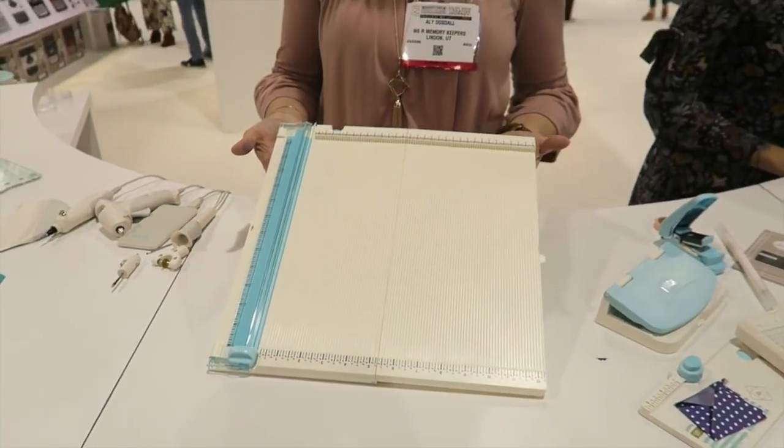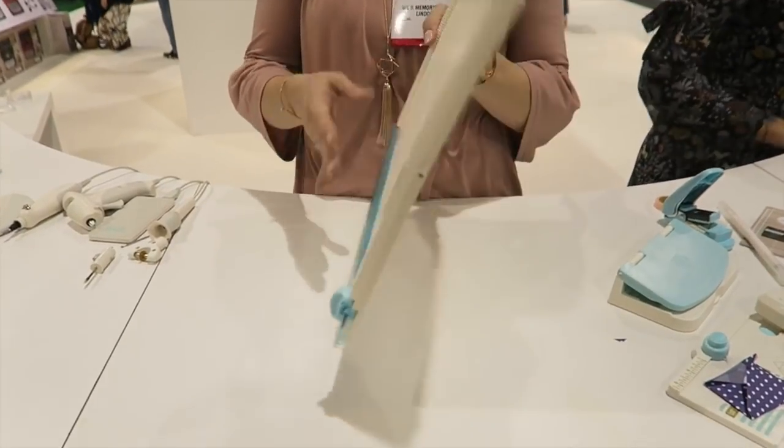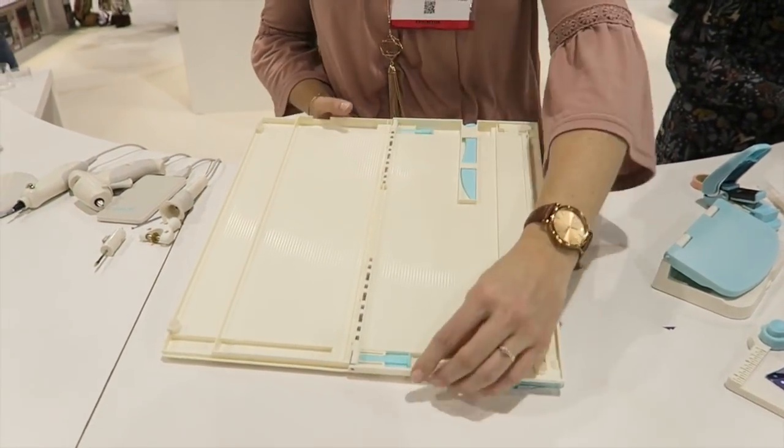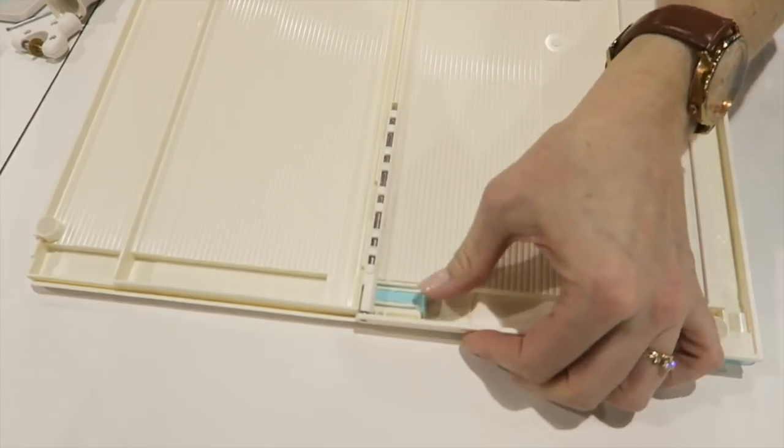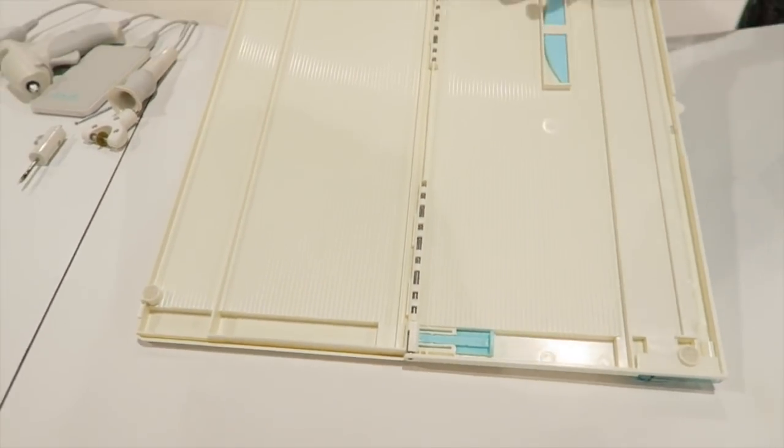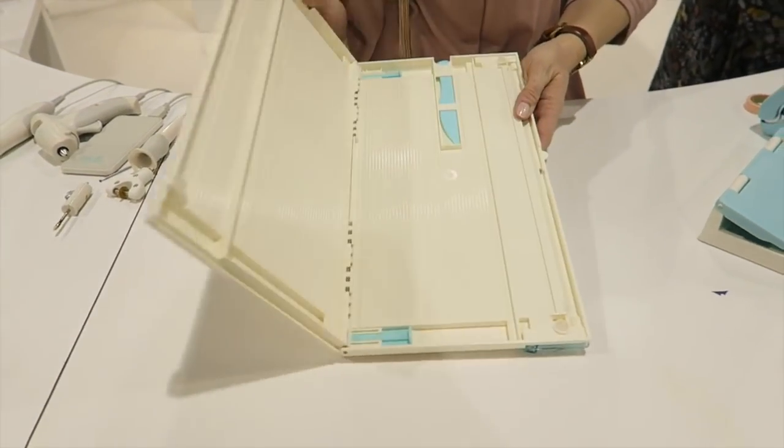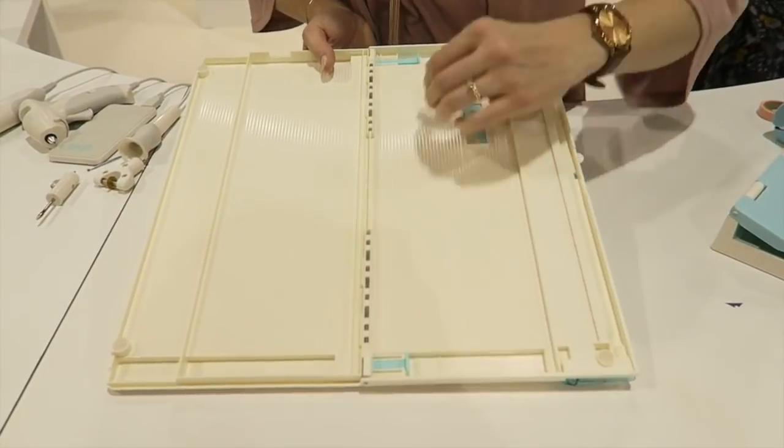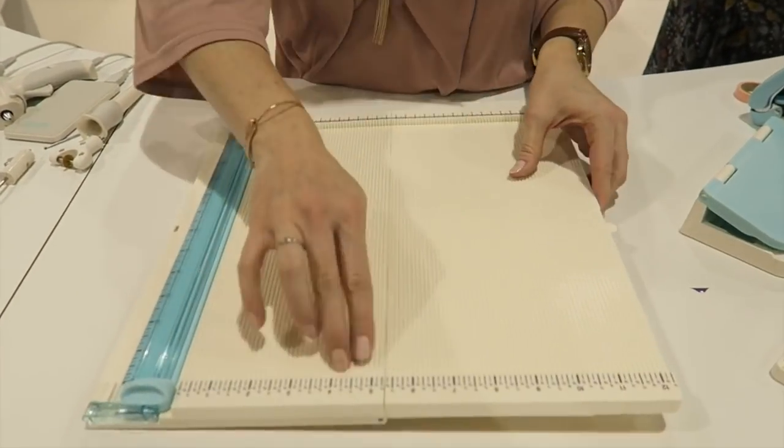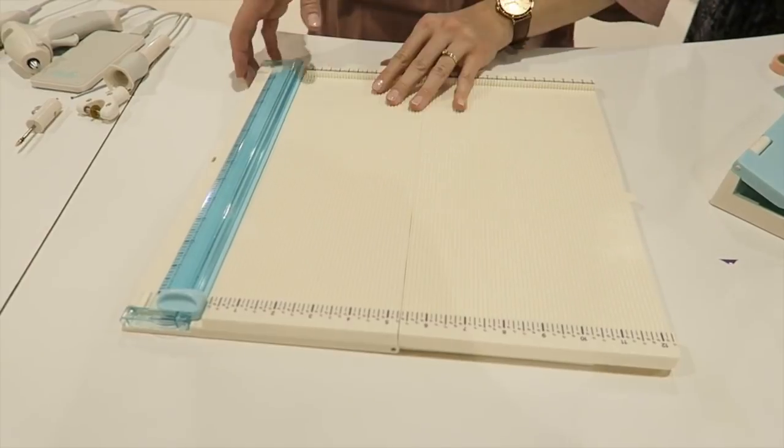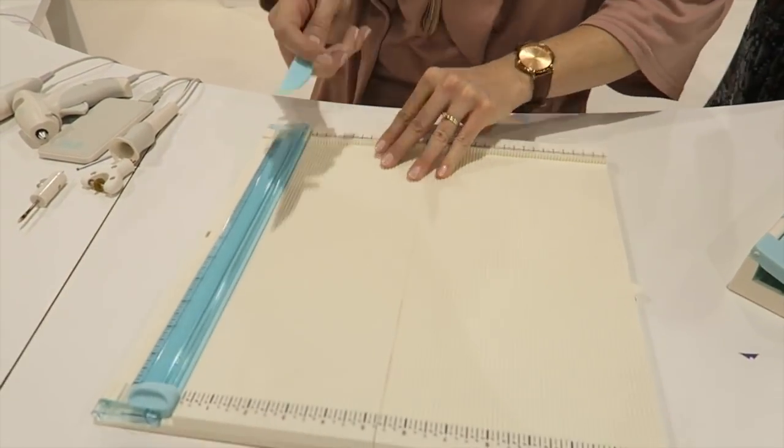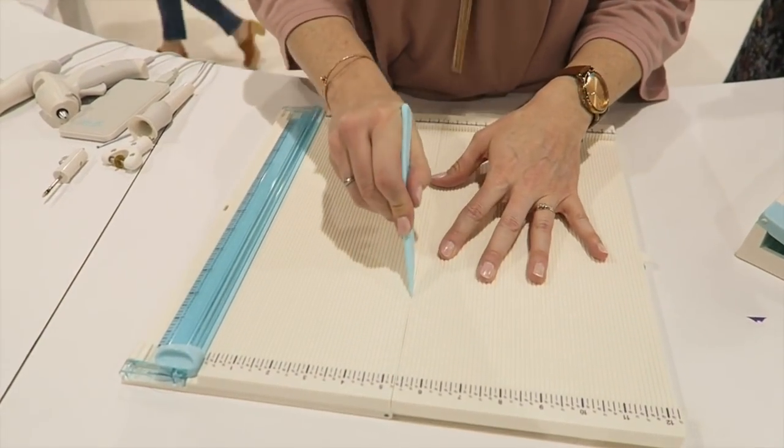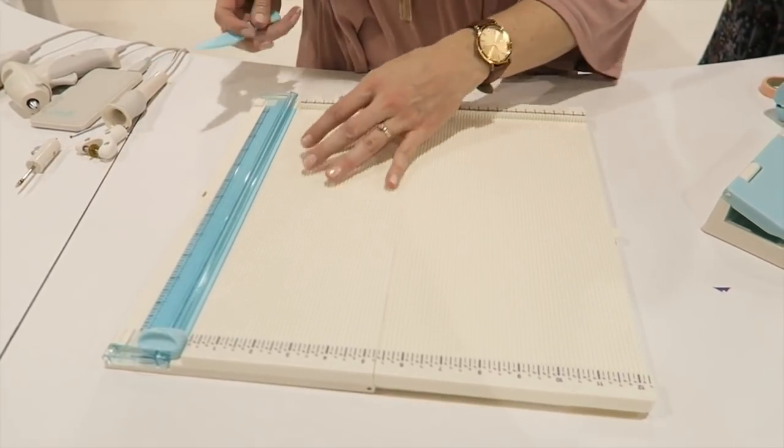So this is our new trim and scoreboard. And what's really neat is we've done the back with extra reinforcement now so you can fold it up to store it. When you open it, it's really sturdy. So when you go to score, you grab the score tool. When you go to score right here, it's not going to bend. It's going to stay nice and sturdy.